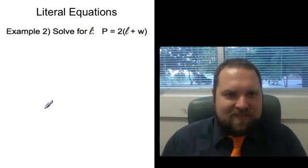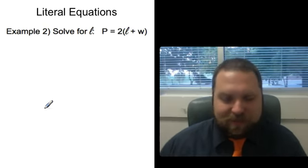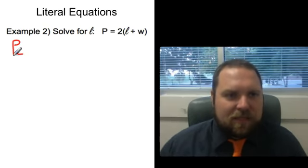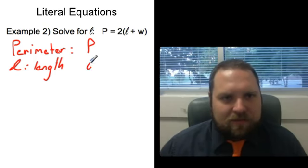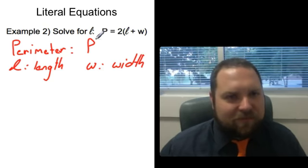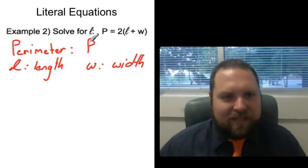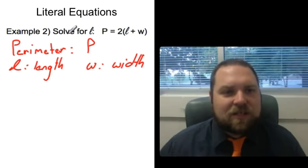So let's look at another. Solve for L, given that P is equal to 2 times L plus W. If you think back, you might even know what this formula means. P stands for our perimeter. L is length. And W is width. So again, this has real meaning. If I have a rectangle, and I know its perimeter, I know its length, and I know its width, they're going to be related by this equation.